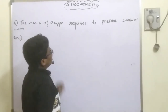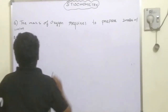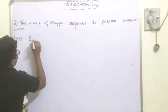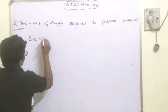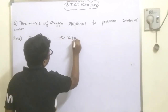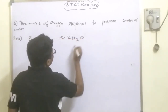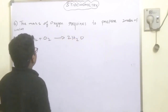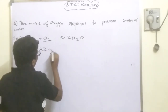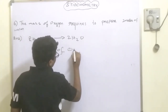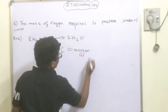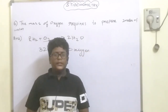Sixth numerical: find the mass of oxygen required to produce 2 moles of water. The reaction is 2H2 plus O2 gives 2H2O. Here, to prepare 2H2O, O2 required is 32 grams of oxygen.